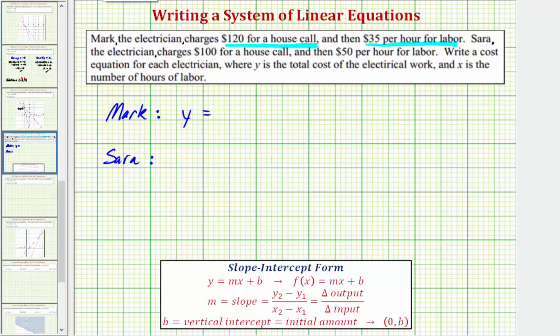So regardless of how long he works, the total cost will include the house call of $120. So the total cost of y would be equal to $120 and then plus the labor cost, which again is $35 per hour, where x is the total number of hours. So we'd have plus 35x.